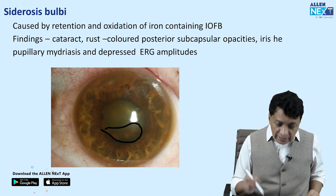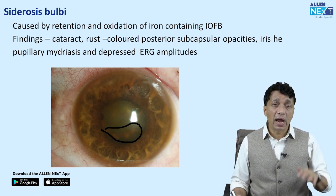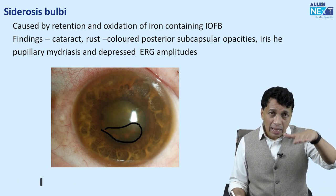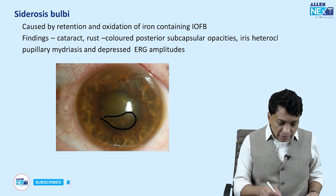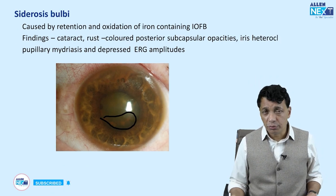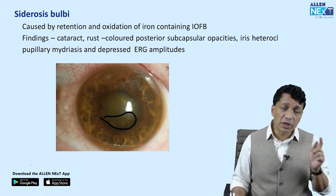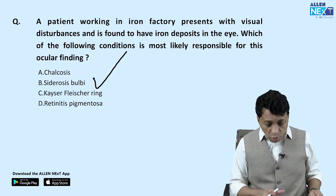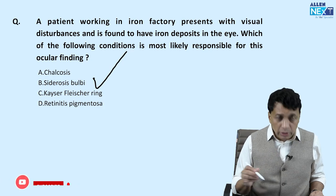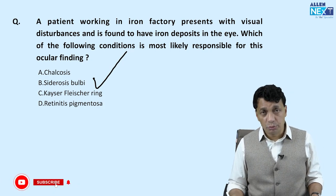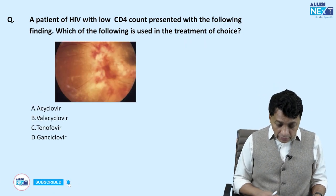Additionally, there are depressed ERG amplitudes — when you do an ERG recording, the amplitude is reduced. These are the findings of the rare condition siderosis bulbi. You should still be able to answer it by common sense: iron factory means you can only have siderosis.